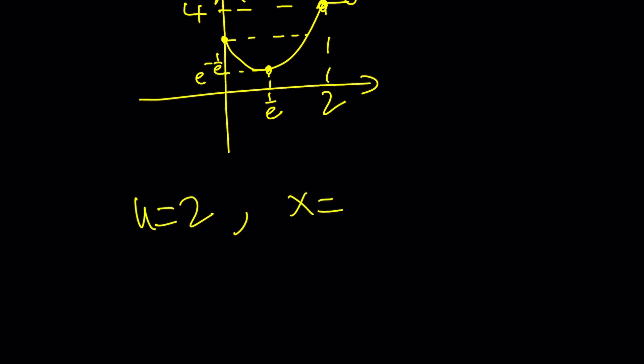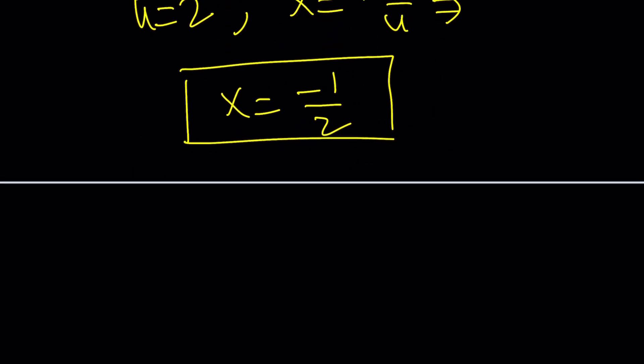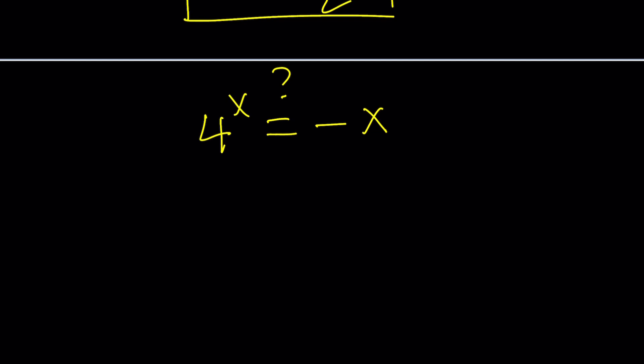Remember, x is equal to negative 1 over u, so from here, x is going to be negative 1 half. And you probably knew that, because when you have an equation like this, think about it, 4 to the power, or let's say you didn't know it, right?